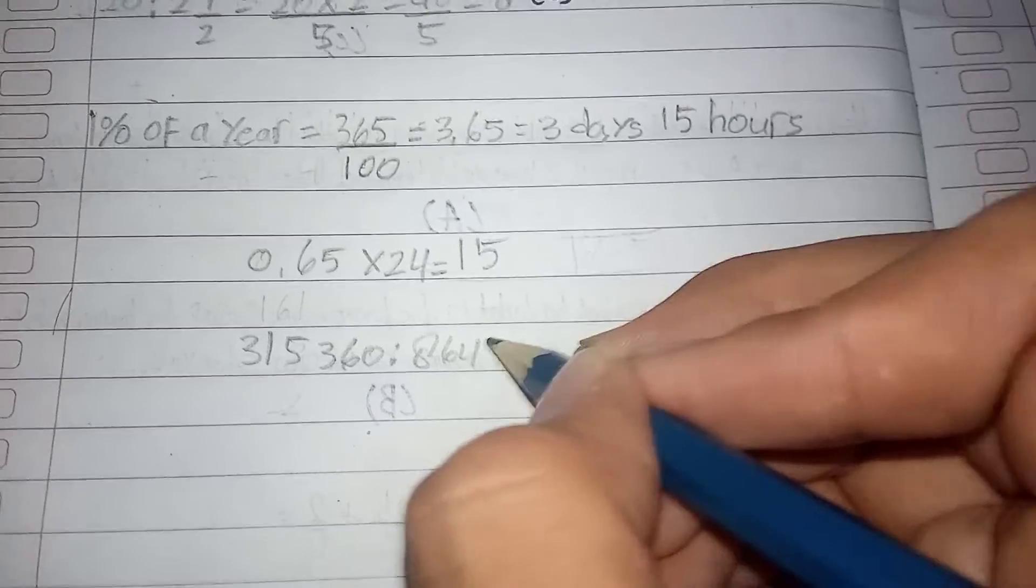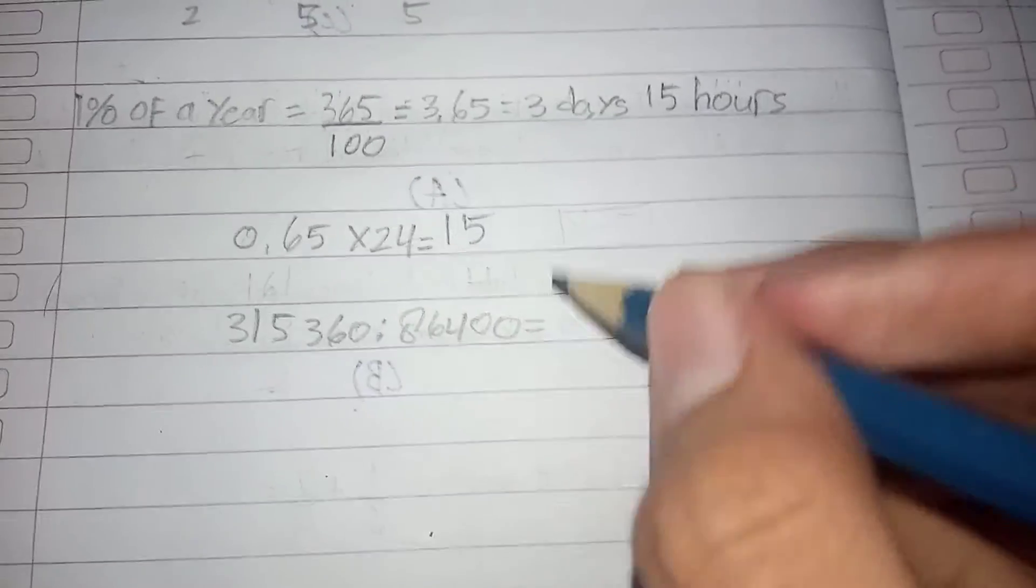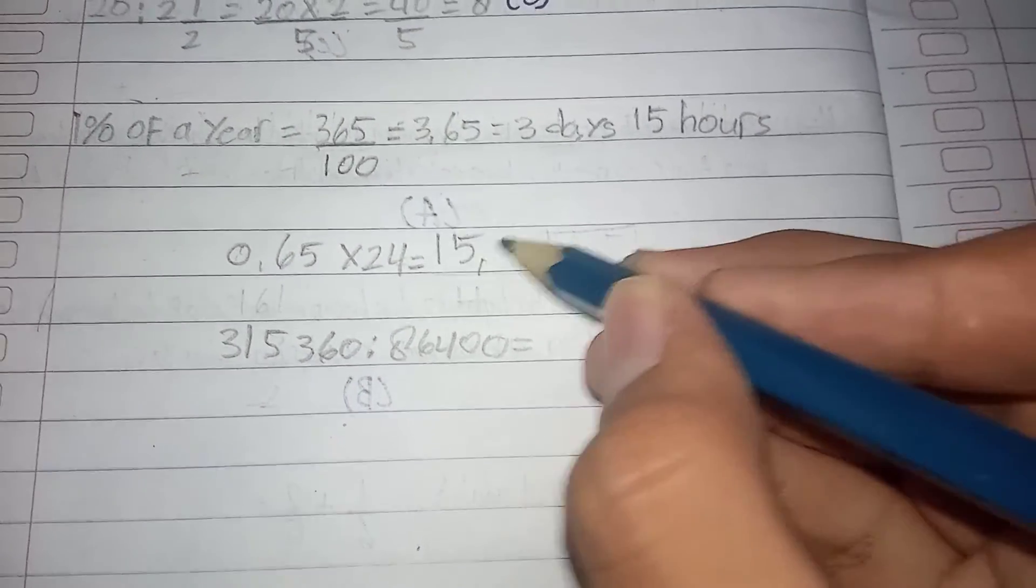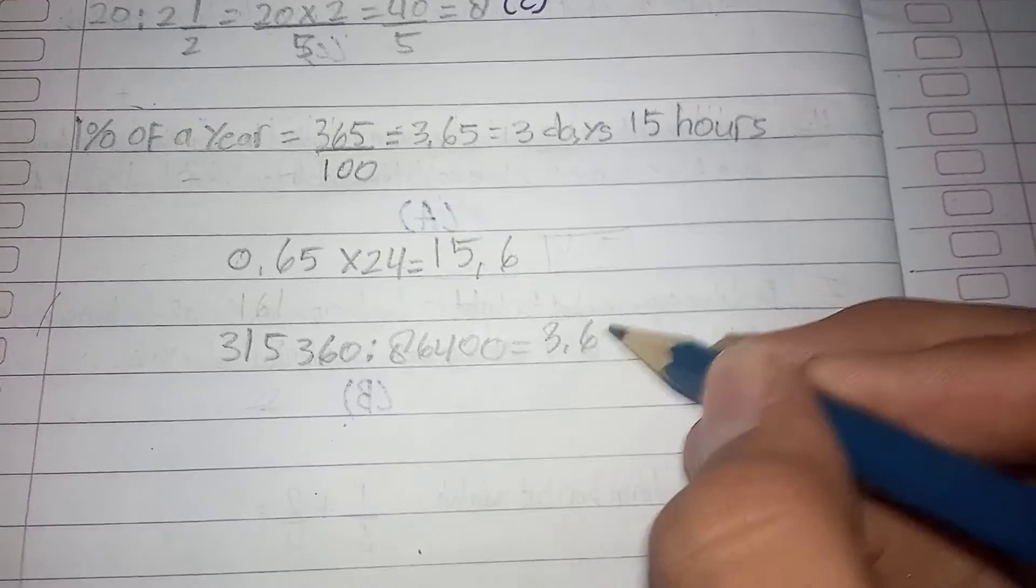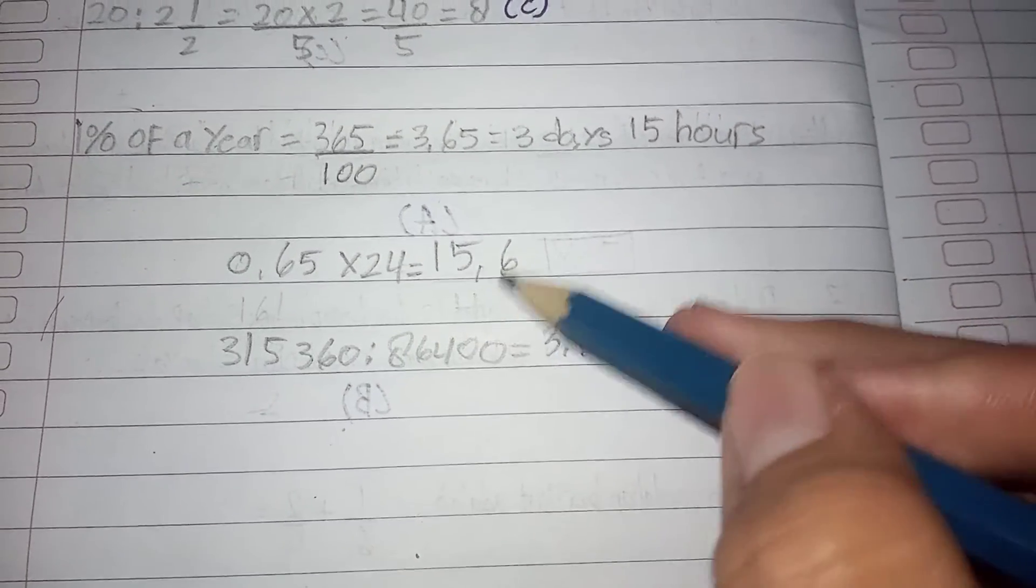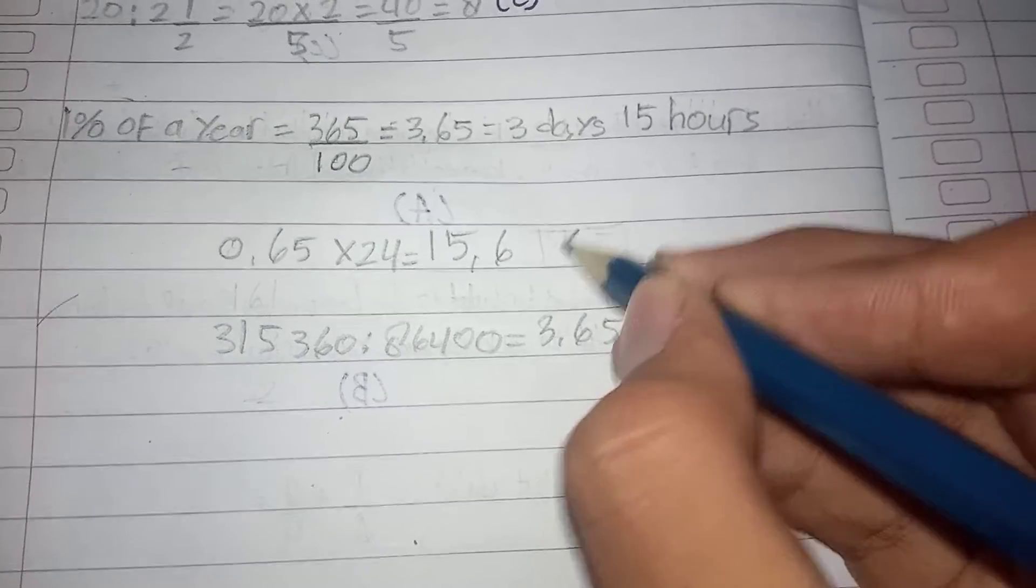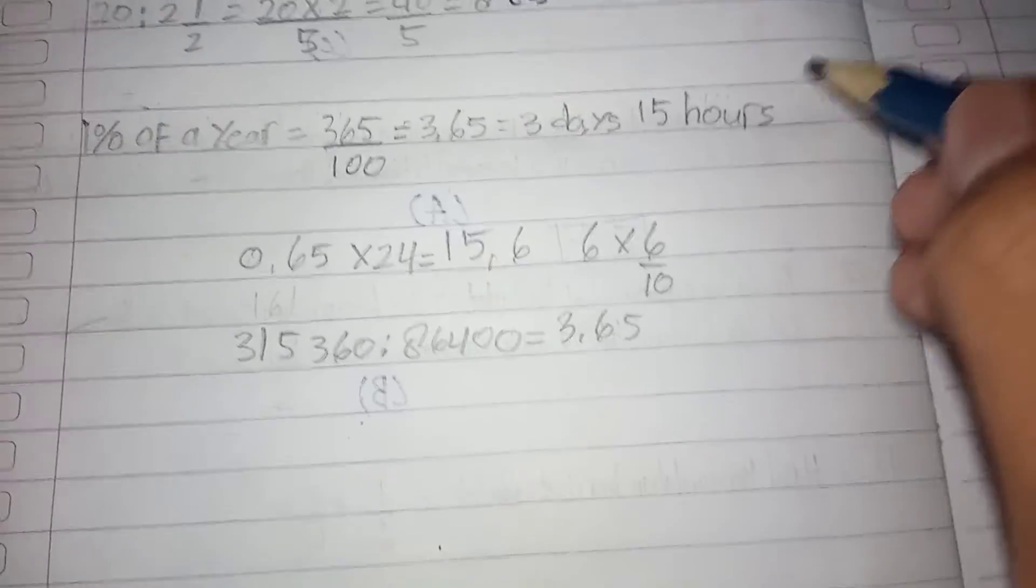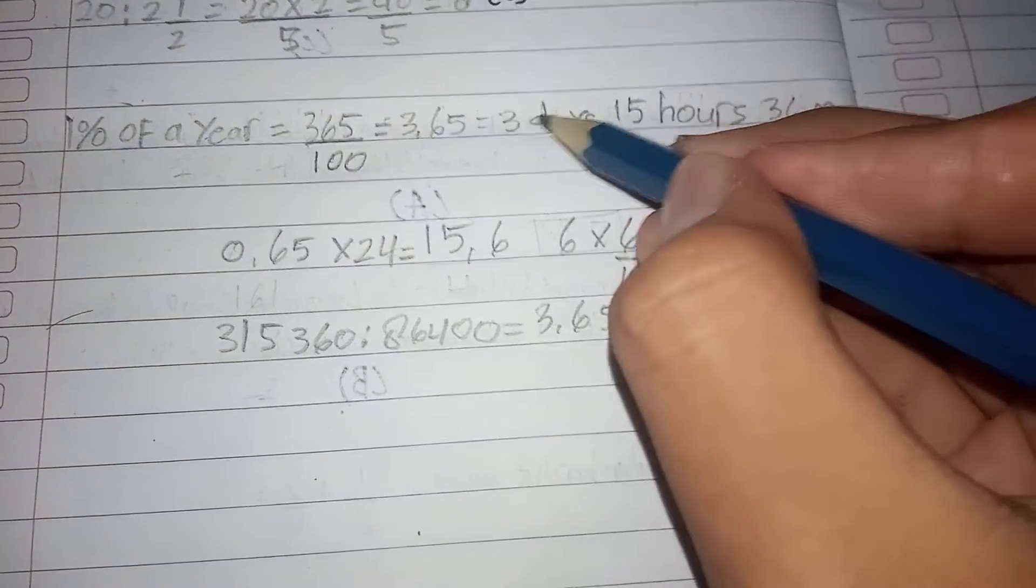Just like this, this equals 3.65. Yeah, it's actually 15.6, not 15. So yeah, if you have the 0.65, which gives 15.6 hours, so it's just 0.6 times by 60, so this is 36 minutes. Yeah, and that's it.